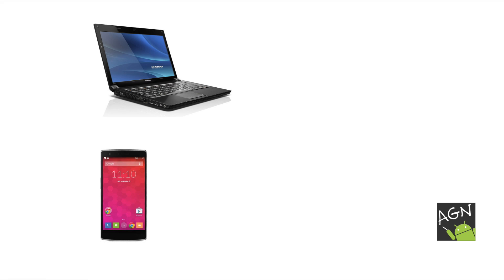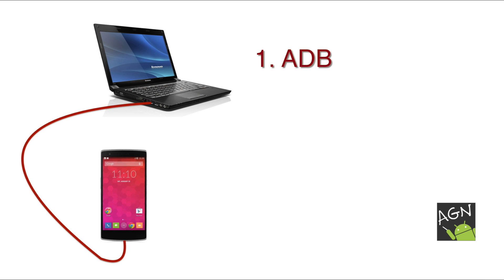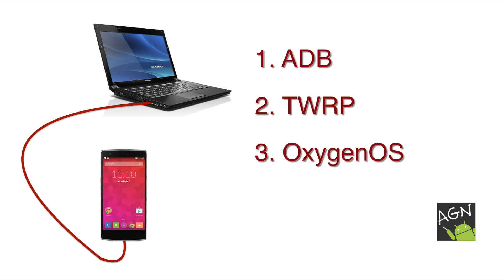We're going to download three things today. The first thing is ADB. ADB is part of the Android software development kit, and it's a tool that lets us send commands via the command prompt from the laptop to the OnePlus One via USB. The second thing we're going to download is TWRP. This is a custom recovery tool that we're going to install on the OnePlus One to replace the stock CyanogenMod recovery. The third thing we're going to download is Oxygen OS. We're also going to download this to the computer, push it over using ADB to the phone, and then we'll just use our custom recovery to press the install button and install it on the phone.